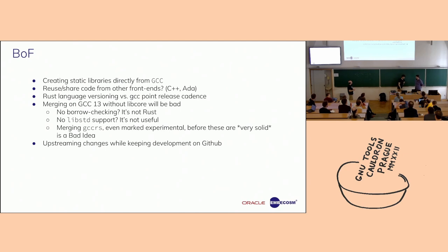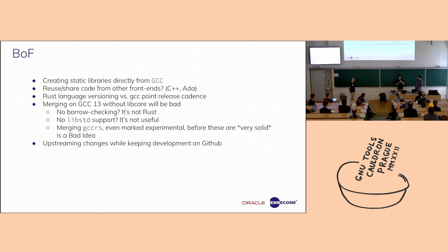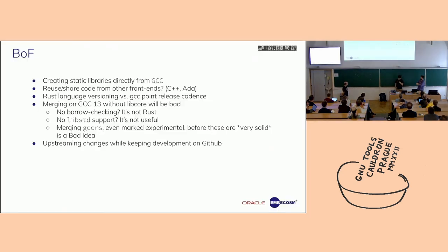Another big thing we'd like to discuss: because we're making a Rust compiler, we want to target people who write Rust, and the Rust community uses GitHub — like it or not. That means we probably have to keep our development on GitHub to make sure that people using the compiler can easily report issues, post fixes, submit pull requests, and all of that. We were wondering how to keep development on GitHub and sometimes upstream patches back to GCC once merged. We know that people from Ada or other front ends like D are doing that as well.